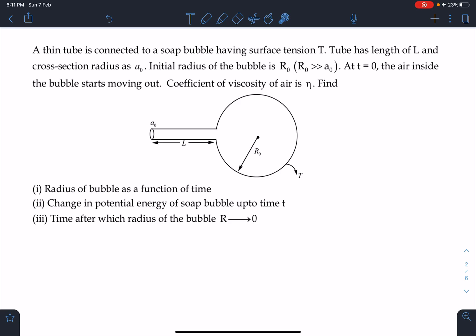Second, we have to calculate the change in potential energy of soap bubble up to time t. Third part is time after which radius of bubble will be tending to zero, that means the lifetime of this soap bubble.